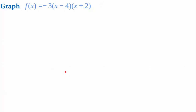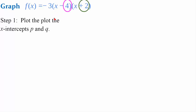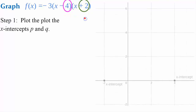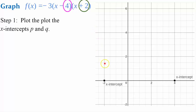Let's try an example. The quadratic function is f of x equals negative 3 times the quantity x minus 4 multiplied by the quantity x plus 2. Step 1: identify and plot the x-intercepts p and q. We have one intercept of positive 4 and one intercept of negative 2, so we plot negative 2 and positive 4 on our coordinate grid.